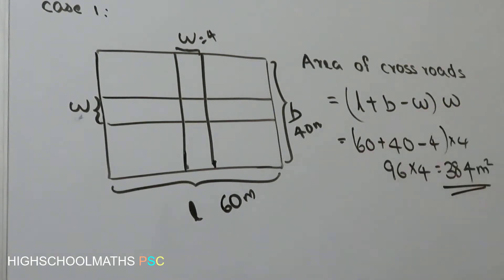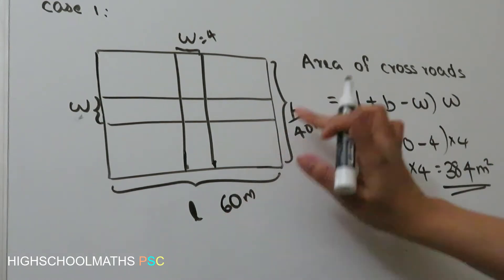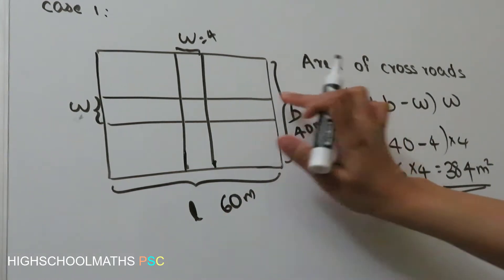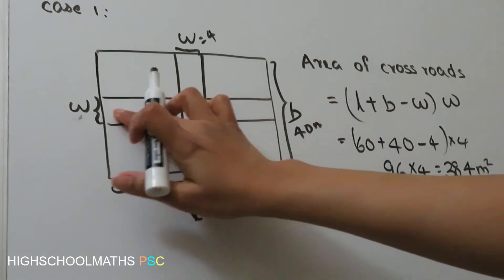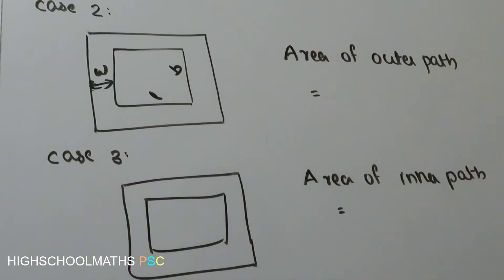Now, the equation is L plus B. You can add L plus B, and then W minus W into W.